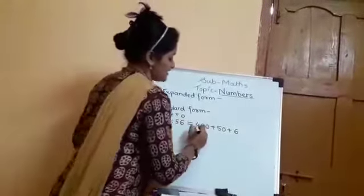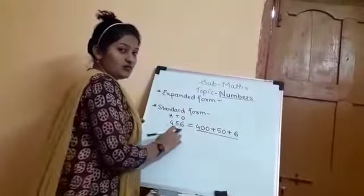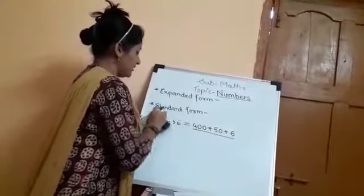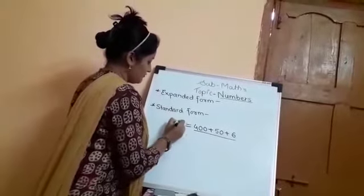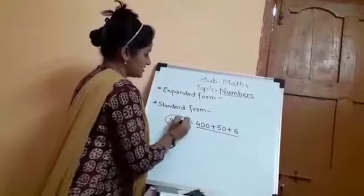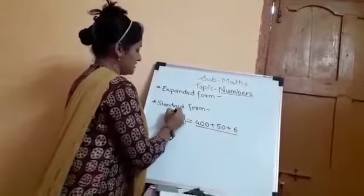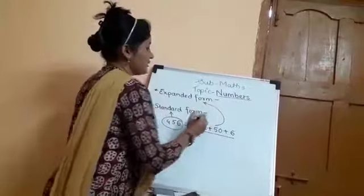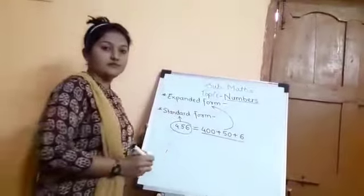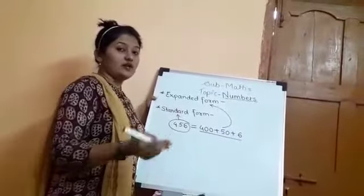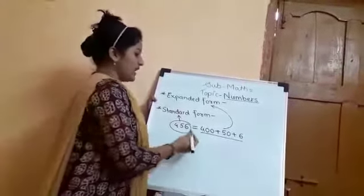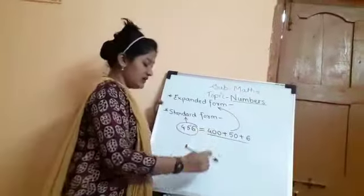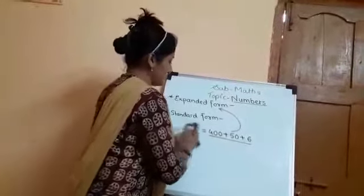So this is called the expanded form of the given number. The form in which we write the number as 456 is called the Standard Form, and 400 + 50 + 6 is called the Expanded Form. You can have both types of questions: write the Expanded Form for a given number, and write the Standard Form for a given Expanded Form.